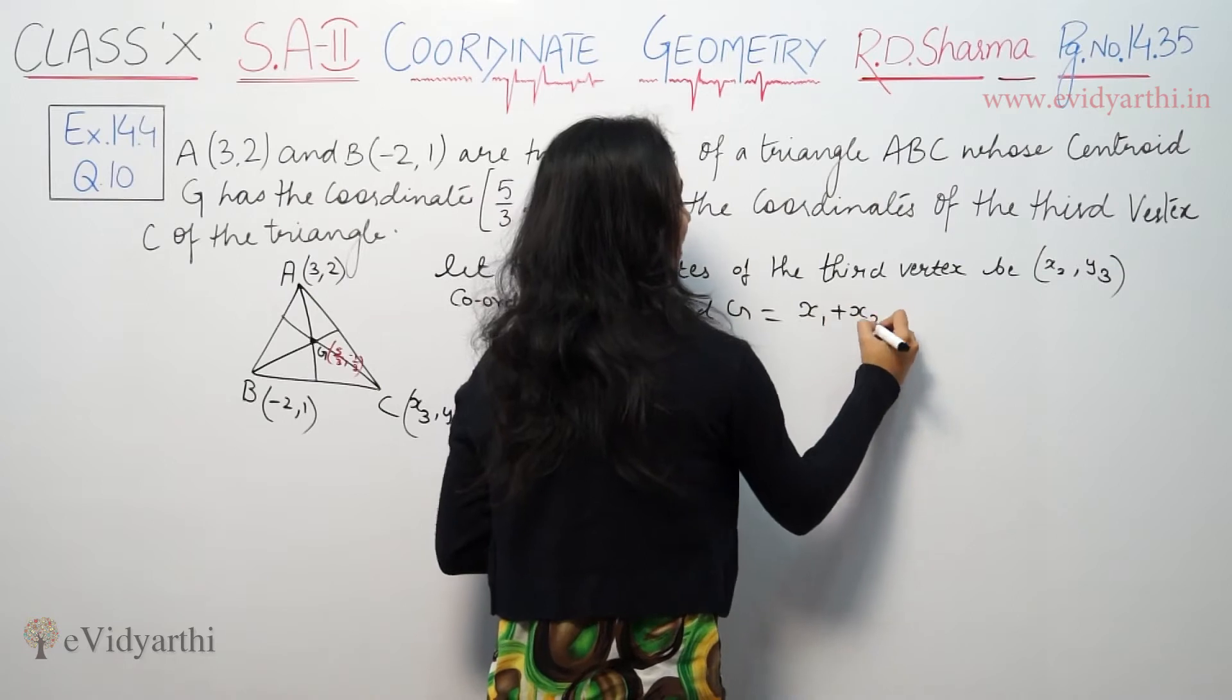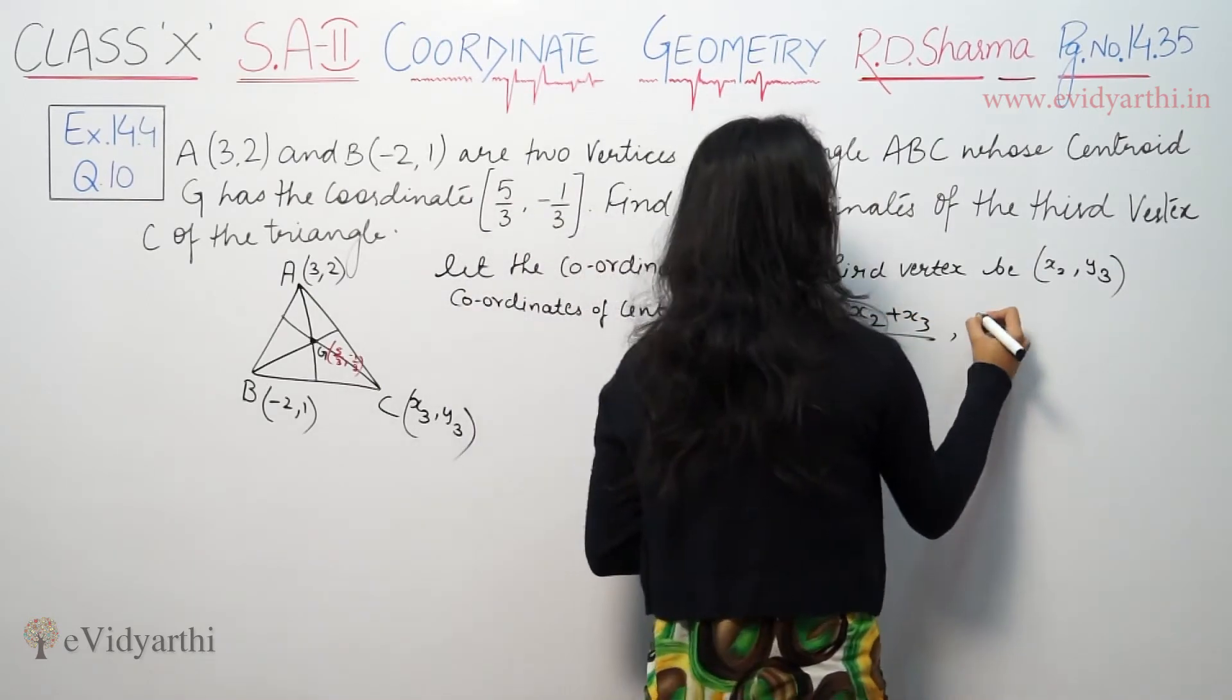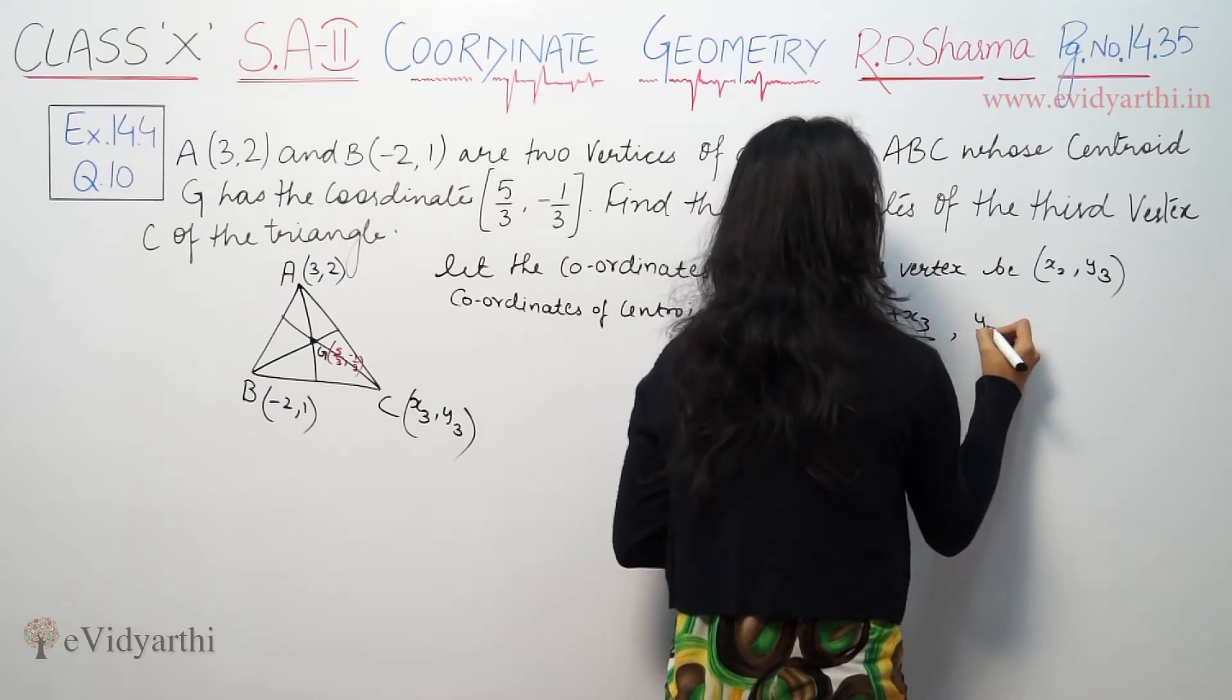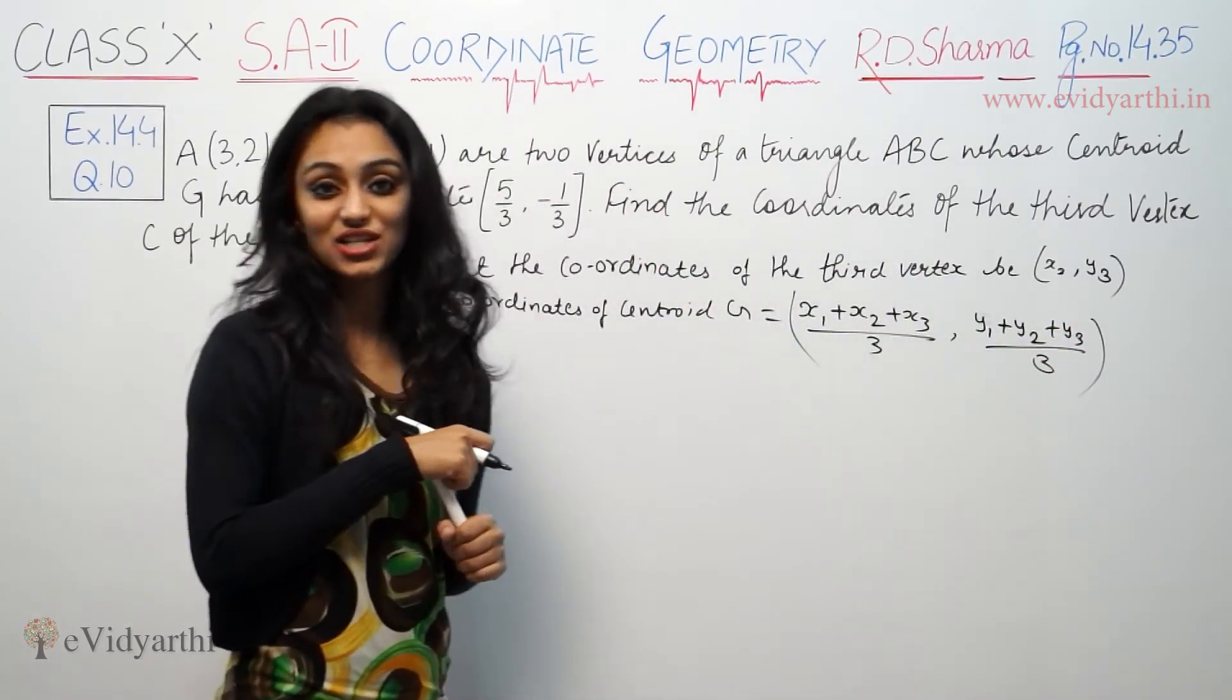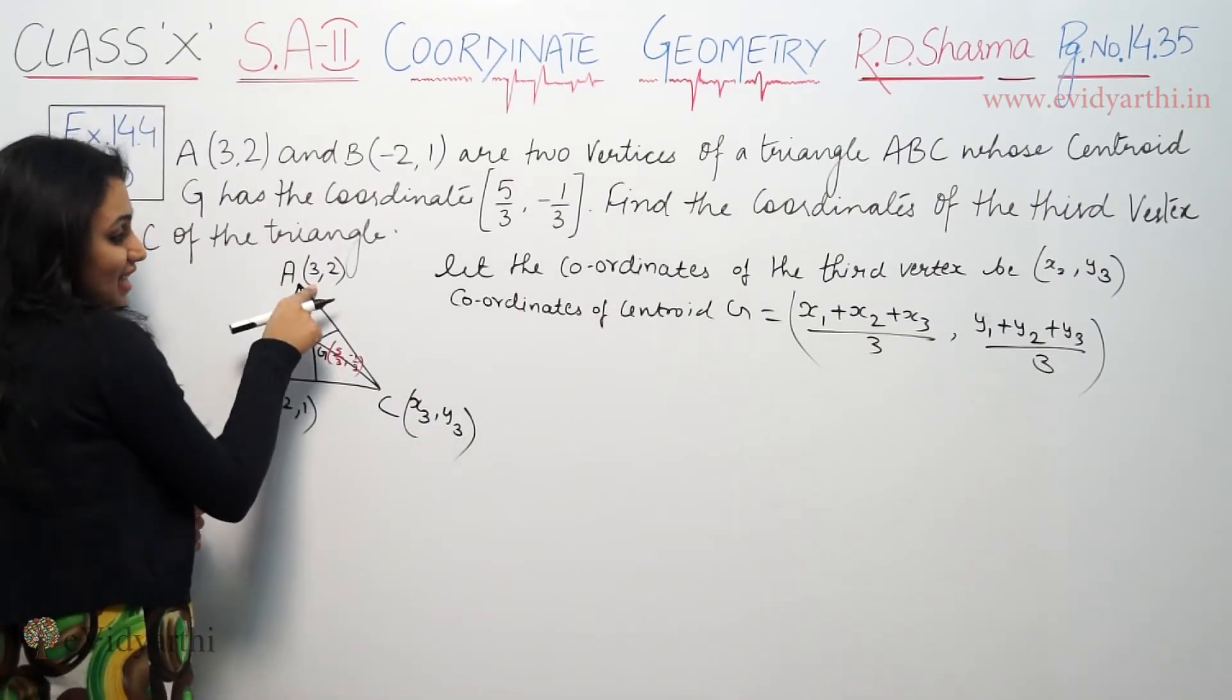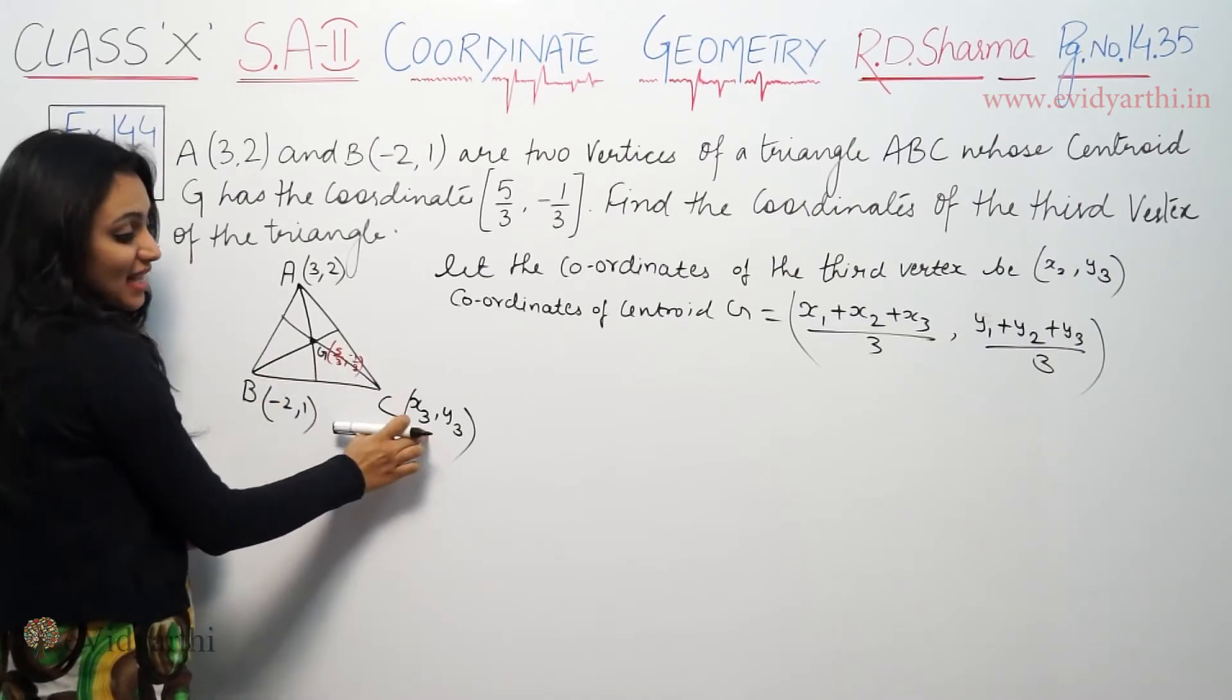The centroid formula is (x1 + x2 + x3)/3, (y1 + y2 + y3)/3. So if I am using centroid, and x1 is given, x2 is given, we can find x3.